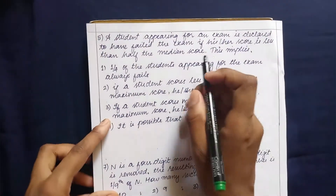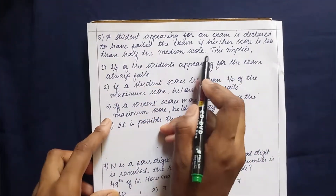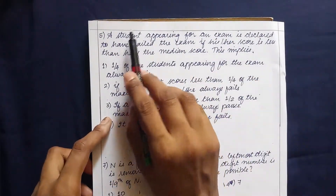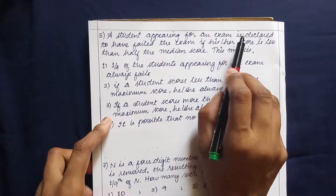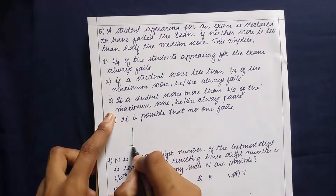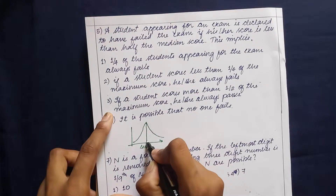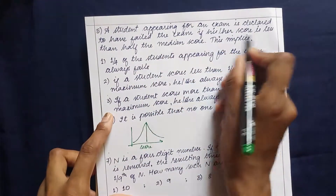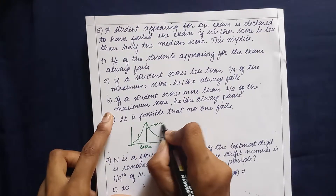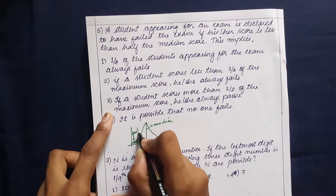Next question: a student appearing for an exam is declared to have failed if his or her score is less than half the median score. By plotting the scores, when a student scores less than half the median score it lies in a specific lower region. Students falling in this range are considered to have failed.